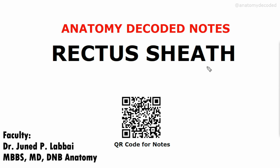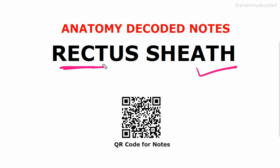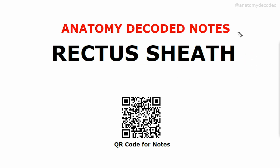Hello everyone. In today's session we'll be covering one very important topic of the anterior abdominal wall called the rectus sheath. In the previous session we learned about the muscles of the anterior abdominal wall, out of which the three flat muscles — external oblique, internal oblique, and transversus abdominis — form a sheath around the rectus abdominis muscle, and that's why the sheath is referred to as the rectus sheath.